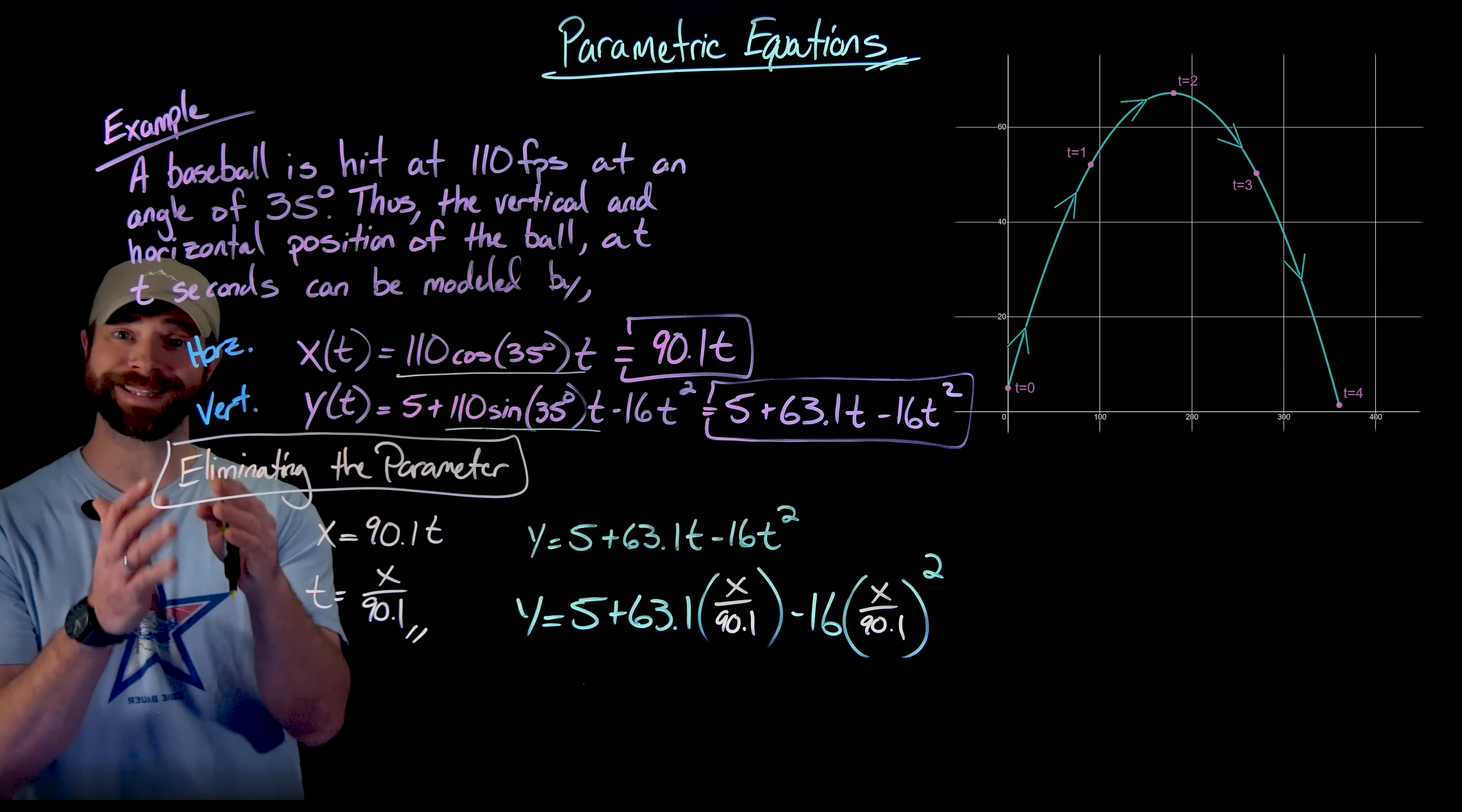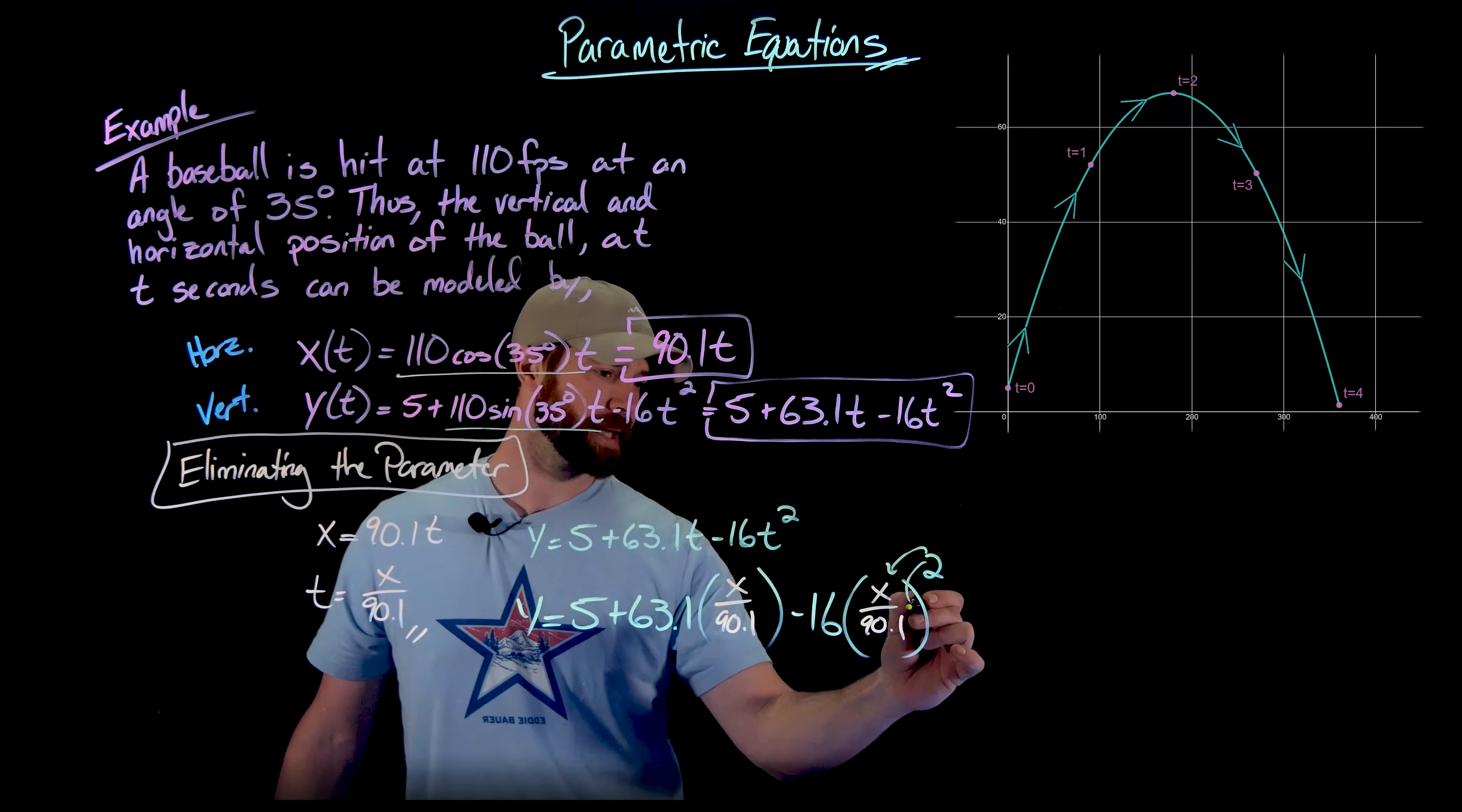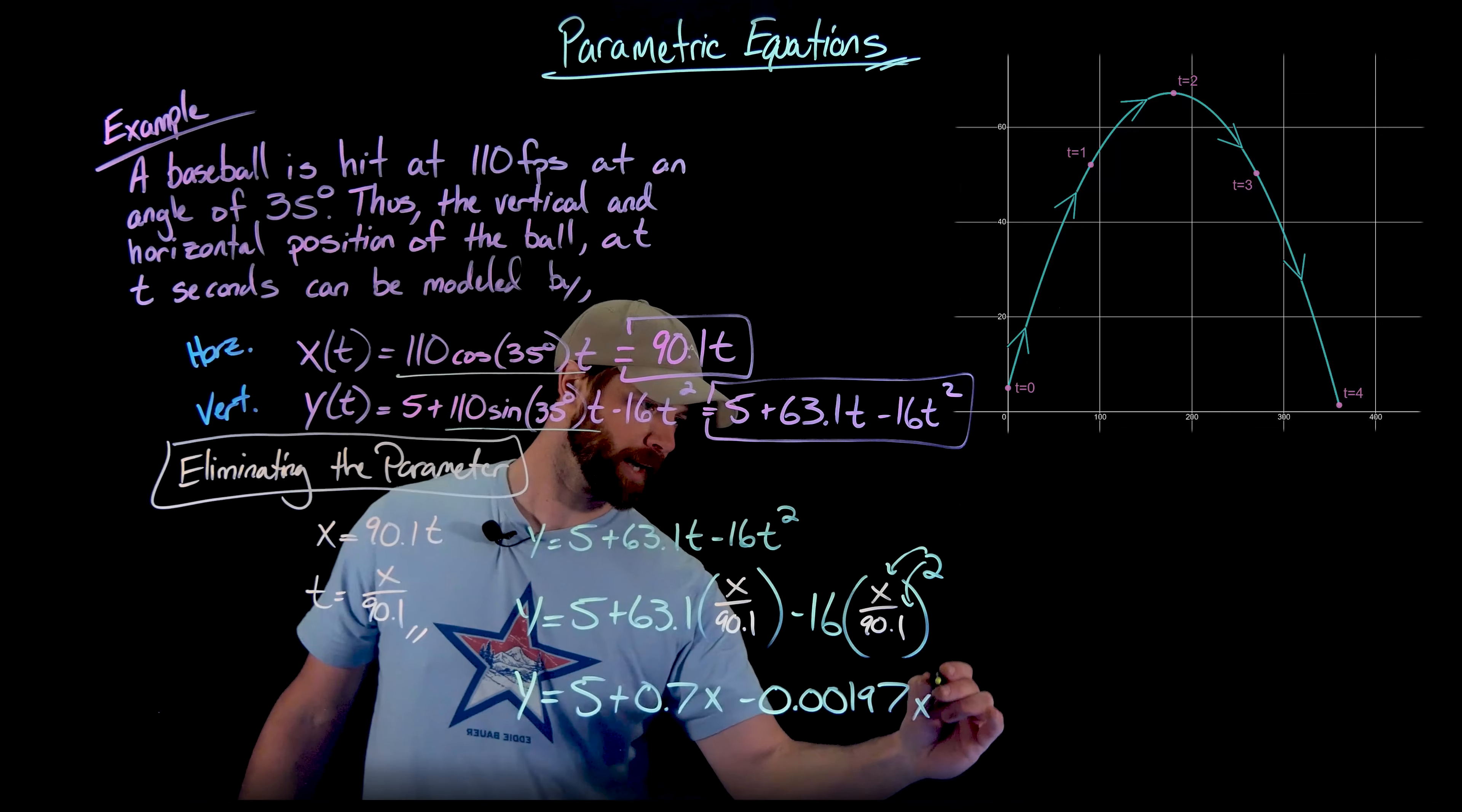And that actually does the work of eliminating the parameter. I now have equation of y in terms of x. Though I feel compelled to clean this up a little bit, all I need to do is just take care of these fractional pieces. I'm just going to take this 63.1 and divide it by the 90.1. And then importantly here when I do this, just to remind you, I'm going to apply this exponent of 2 to both the x squared and the 90.1. And when I do that, what I get is 5 plus 0.7x. And then here I get 0.00197x squared.